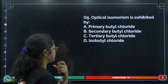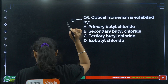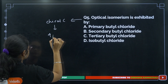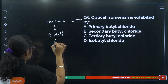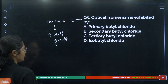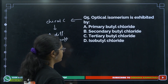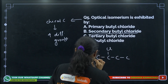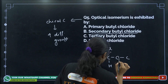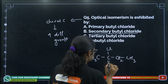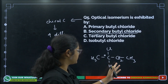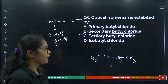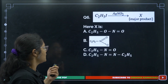Question 5: Optical isomerism is exhibited by which compound? For optical isomerism we need a chiral carbon — all four groups must be different. Looking at secondary butyl chloride, on the central carbon we have a methyl group, ethyl group, chlorine, and hydrogen — four different groups. That is why it is optically active. The answer is option number B.